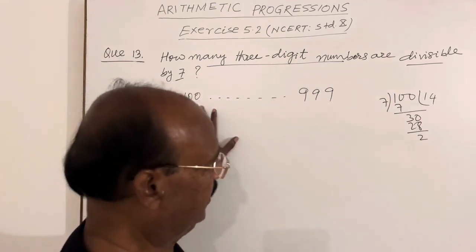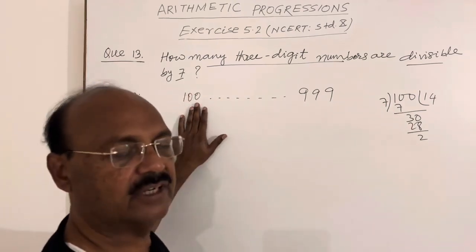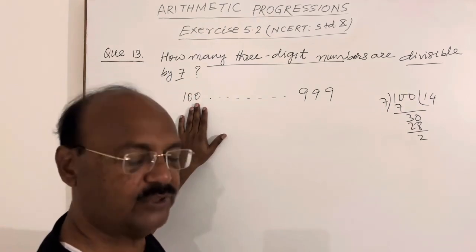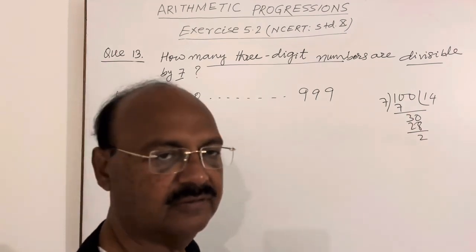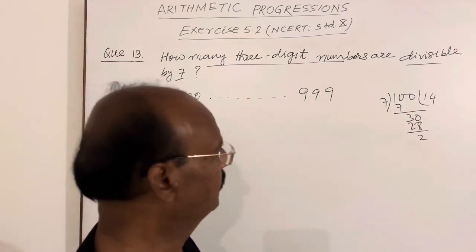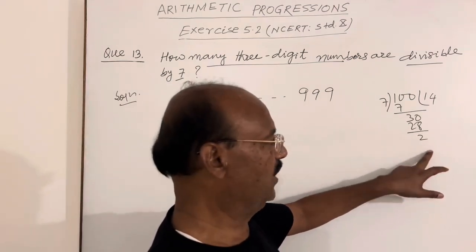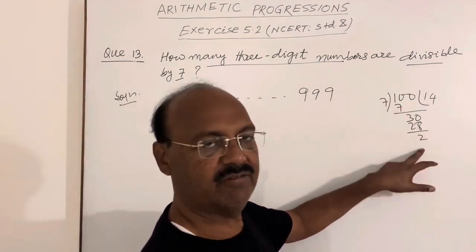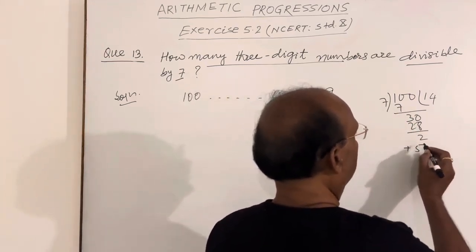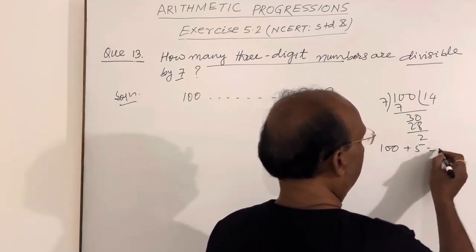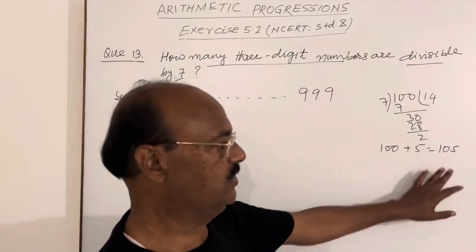Whenever you divide 100 by 7, remainder is 2. To make it divisible by 7, if you subtract 2 then it will be 98 and it will not remain a three-digit number. So we cannot subtract 2. What is the remedy? We can add 5 here so that 2 plus 5 equals 7, which will be divisible by 7. So 100 plus 5 equals 105. This is a three-digit number which is divisible by 7.